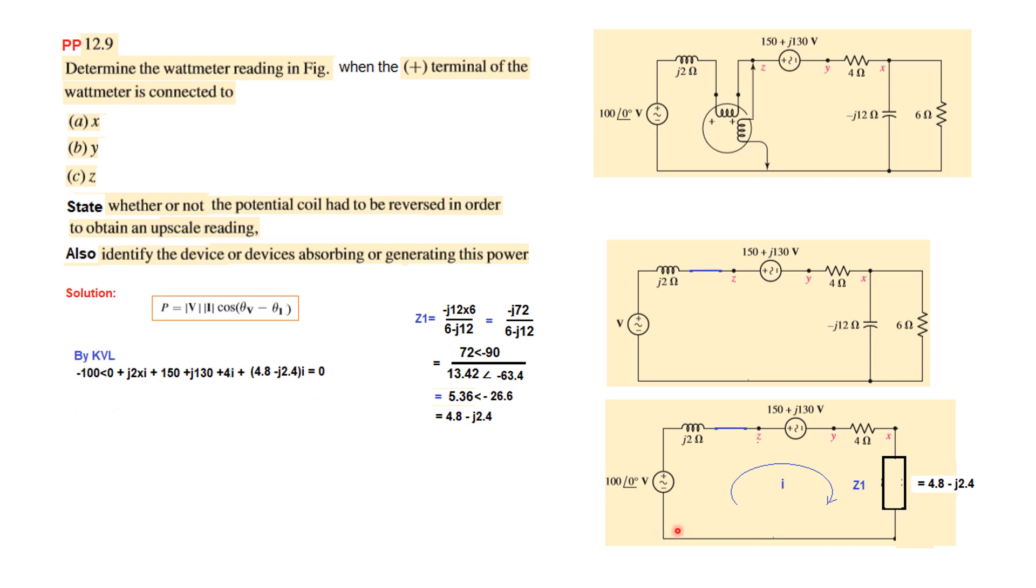We start from one corner: minus 100 angle 0, plus j2 times i. This is a voltage source so we don't multiply with current. We write it as is: plus 150 plus j130, plus 4 times i, and plus this impedance 4.8 minus j24 times i equals 0. From here, by solving and taking the terms together, we can calculate i which will be 15.83 angle minus 108.4 ampere.